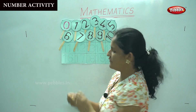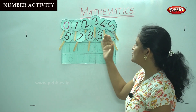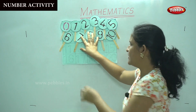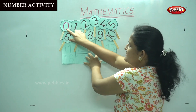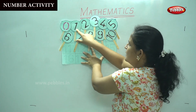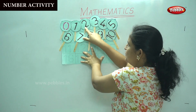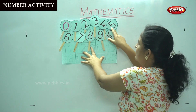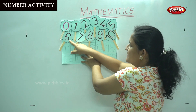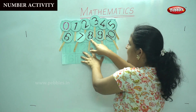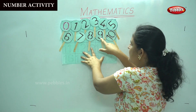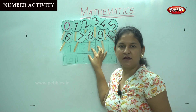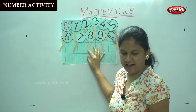So now we have got numbers from 0 to 10. Shall we tell the numbers, children? 0, 1, 2, 3, 4, 5, 6, 7, 8, 9, 10. So we have numbers 0 to 10.